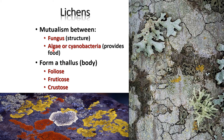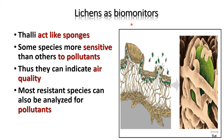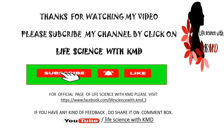Lichens are a mutualism between fungus and algae, especially cyanobacteria. The fungus helps in water and mineral absorption, while the algae or cyanobacteria provide food for the fungus. There are three forms: foliose, fructicose, and crustose. Lichens act as biomonitors because the thallus acts like a sponge. Some species are more sensitive to pollutants and can act as air quality indicators; more resistant species can also be analyzed for pollutants.